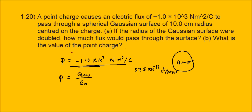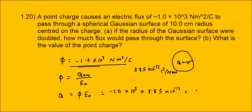The flux will remain minus 1.0 × 10³ Newton meter squared per coulomb. The value of the point charge Q is equal to phi times epsilon-0, which is minus 1.0 × 10³ multiplied by 8.85 × 10⁻¹², giving 8.85 × 10⁻⁹ coulombs. Since the flux is negative, the point charge is also a negative charge.